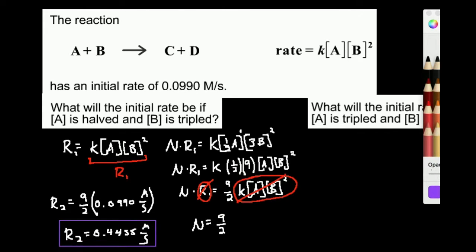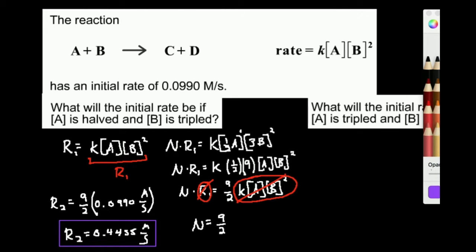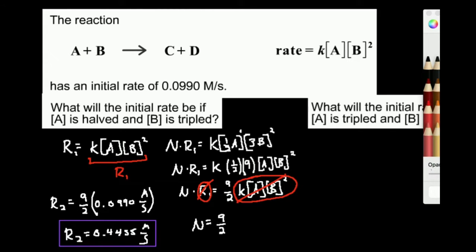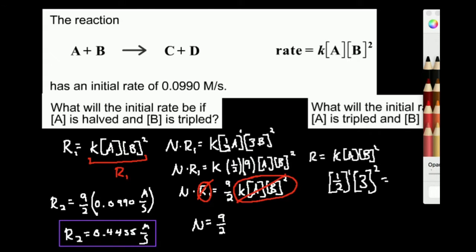Now, if you didn't want to do it the rigorous analytical way, there's a much simpler way to figure it out. Rate is equal to k times A times the concentration of B squared. All I really have to do is say: if I halve A, plug in 1/2 to the first power; B is tripled, so throw a 3 in for B and square it. That gives 1/2 times 3-squared, which is 9, so 9/2.